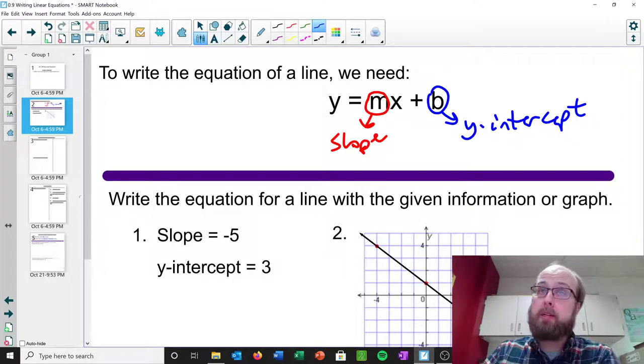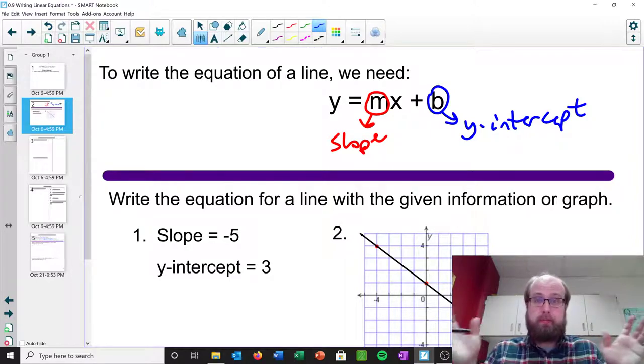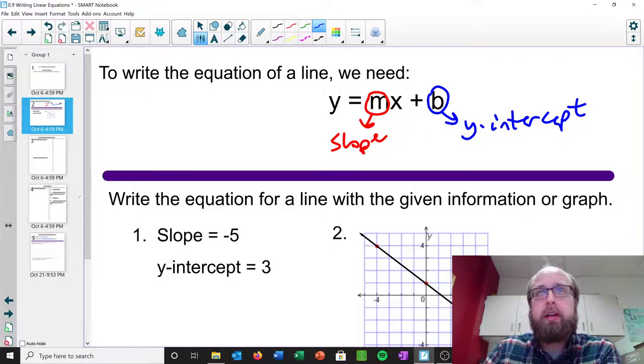And sometimes they're going to be given to us, and sometimes they're not, and we have to figure them out ourselves. Basically, if we don't have this information, you need to find the slope, you need to find the y-intercept. Once you have those two pieces of information, you can write your equation.